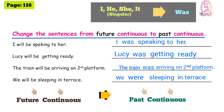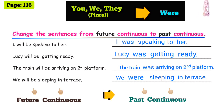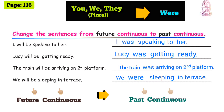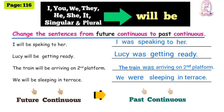Summary: Past continuous tense — singular subjects (I, he, she, it) use auxiliary verb 'was'; plural subjects (you, we, they) use auxiliary verb 'were'. Future continuous tense — all subjects (I, you, we, they, he, she, it — singular and plural) use auxiliary verb 'will be'.